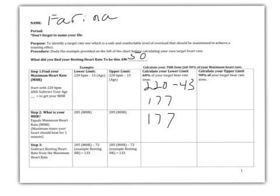You can also use this to find your upper limit, your 90%. These numbers would be the same — it's 220 minus your age, which is 177, and that goes down in this box too.